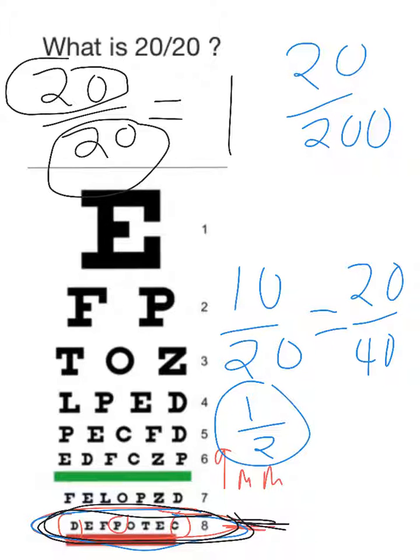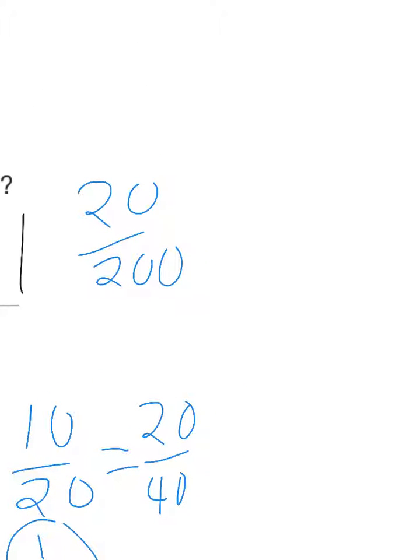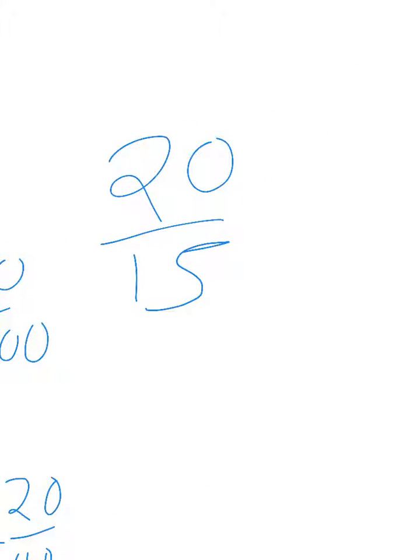Let's do one more. Suppose someone has a vision of 20 over 15. In this case, the person's vision is about 1.3 times better than a person with 20/20 vision. Okay, that's it. Hopefully that helps.